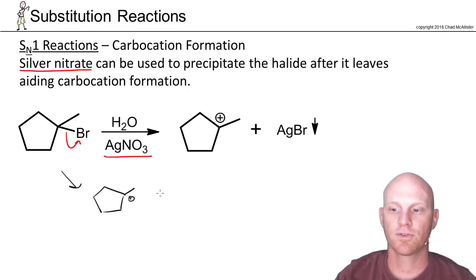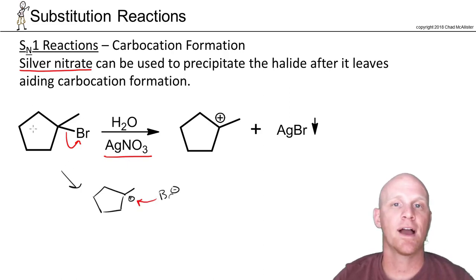This step is highly endothermic, but it's also highly reversible. Maybe bromide just comes back and reattaches and we get back to having our reactant. It's kind of like if you've been in one of those relationships where you break up and get back together and break up and get back together. That could happen here.